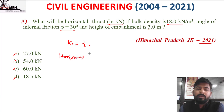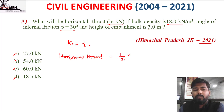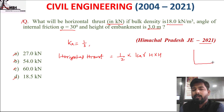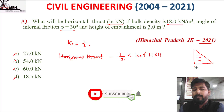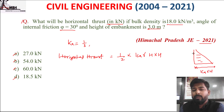To find horizontal thrust: horizontal thrust = (1/2) × Ka × γ × H × H = (1/2) × K × γ × H². Substituting Ka = 1/3, γ = 18, H = 3.